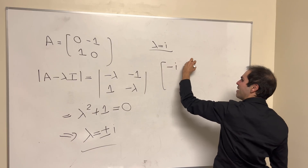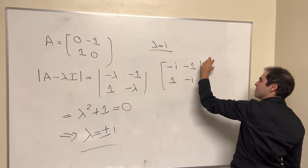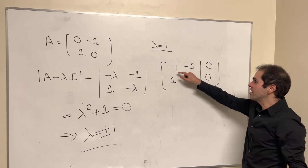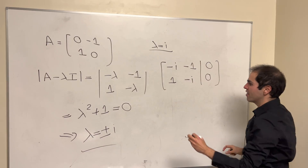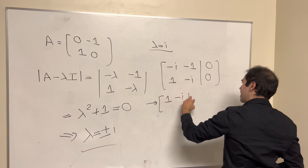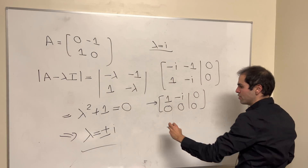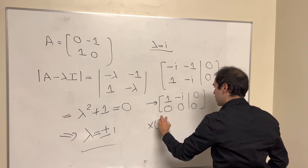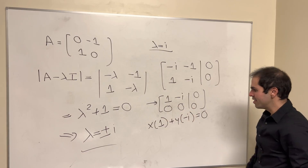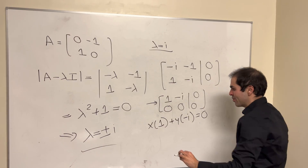So the matrix is [-i, -1; 1, -i] with a zero right-hand side. Because it's not invertible, we can take one row and leave the other as zero. For 2×2 matrices, this gives us the row [1, -i; 0, 0], and so we just have to solve x + y·(−i) = 0. In a 2×2 case, it boils down to guessing two numbers that work.